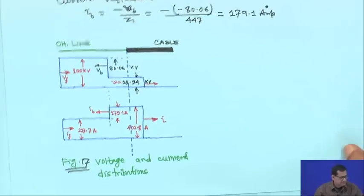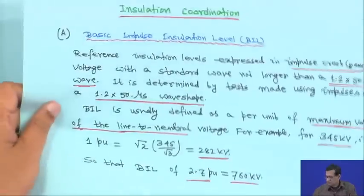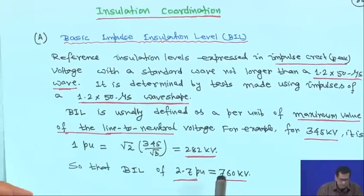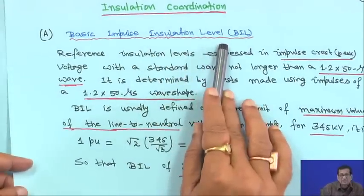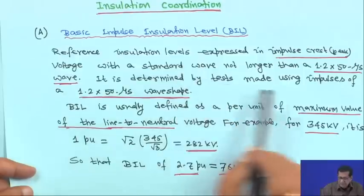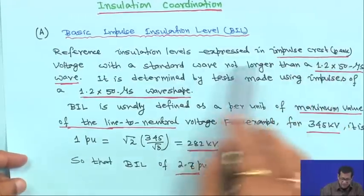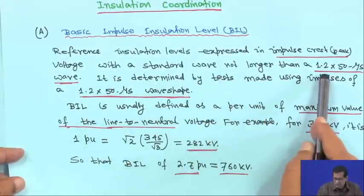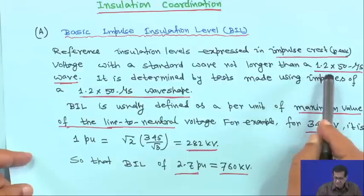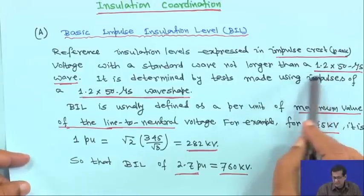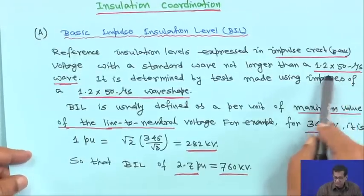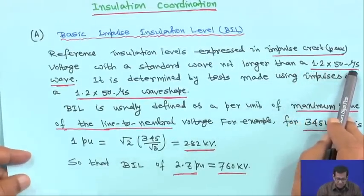Once this transient overvoltage discussion is over, we move to insulation coordination. First, the Basic Impulse Insulation Level, or BIL: it is the reference insulation level expressed in impulse crest — that is, the peak voltage — with a standard wave not longer than 1.2×50 microseconds.